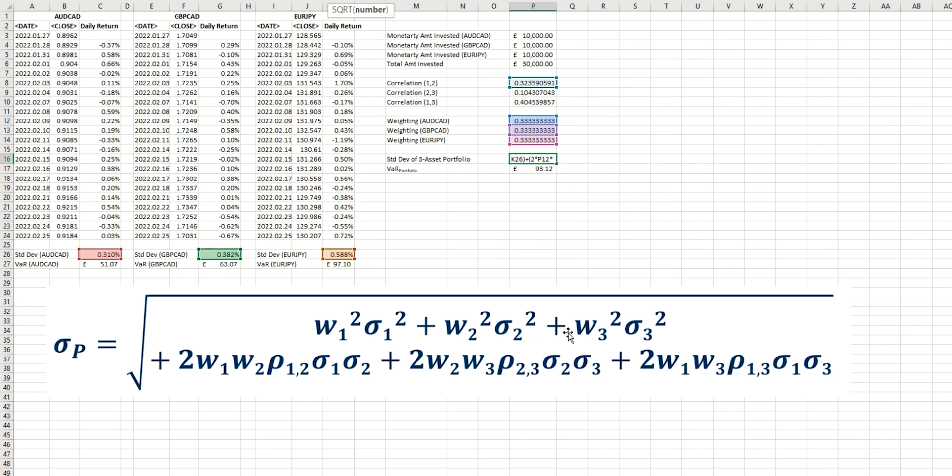Just put a plus in there, and let's now concentrate on these last two. We have 2 multiplied by weight 2, and then weight 3, which is this multiplied by this. Multiplied by the correlation coefficient between 2 and 3, which of course is this value that we have here. Multiplied by the standard deviation of position 2. And the standard deviation of position 3. And so again, we now have this term here.